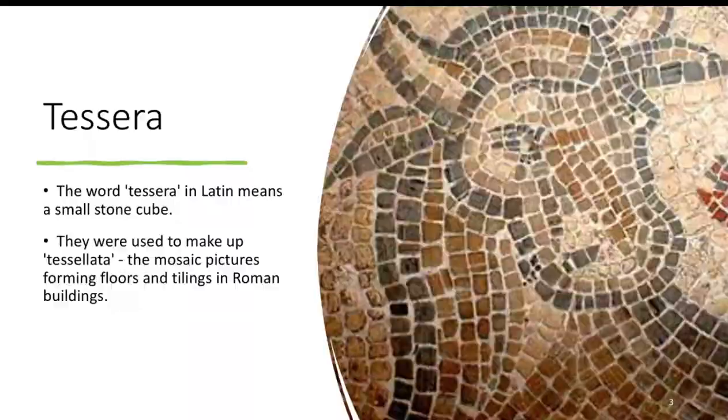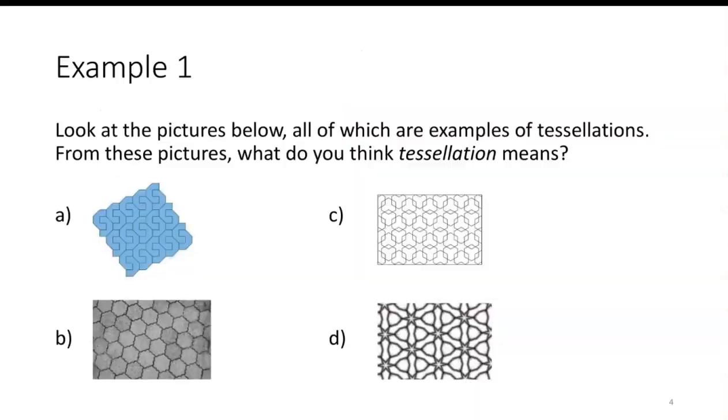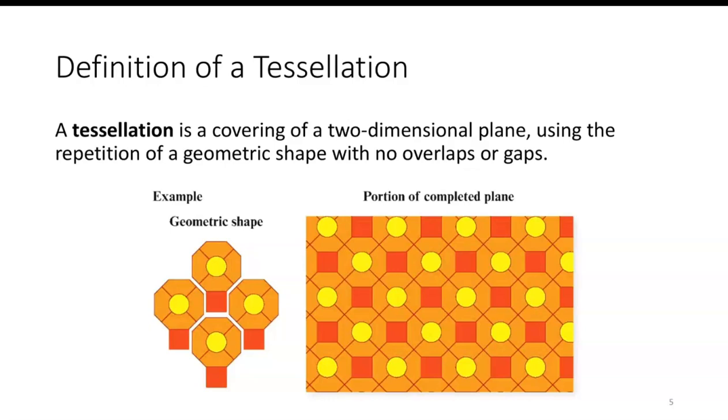Look at these pictures—all of them are examples of tessellations. From the pictures, what do you think tessellation means? A tessellation is a covering of a two-dimensional plane using the repetition of a geometric shape with no overlaps and no gaps.